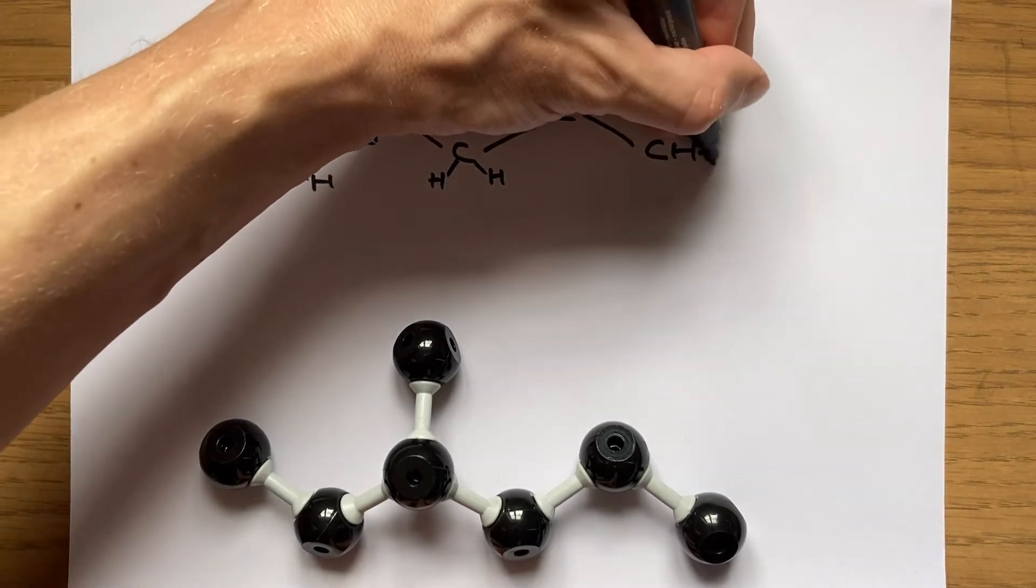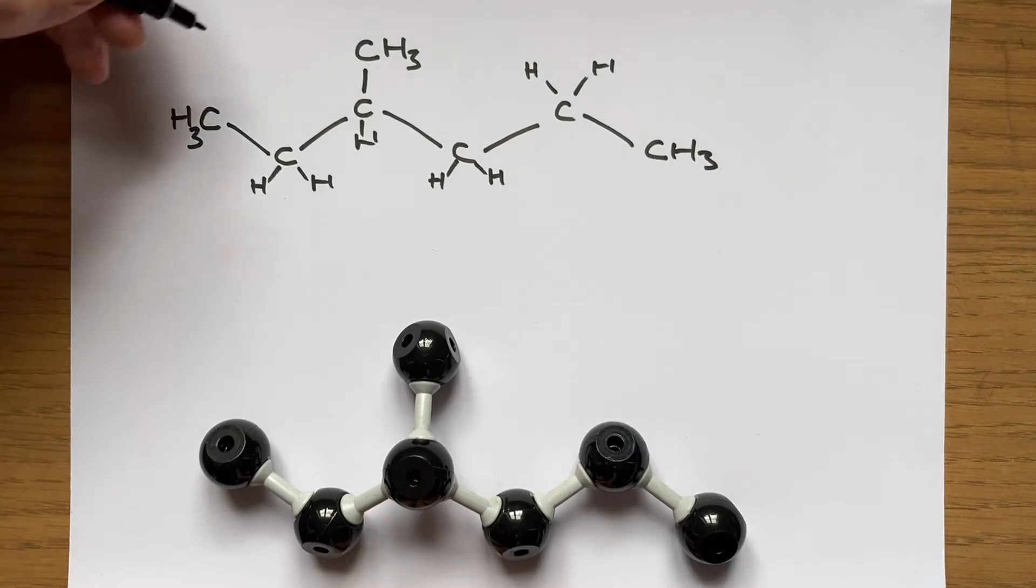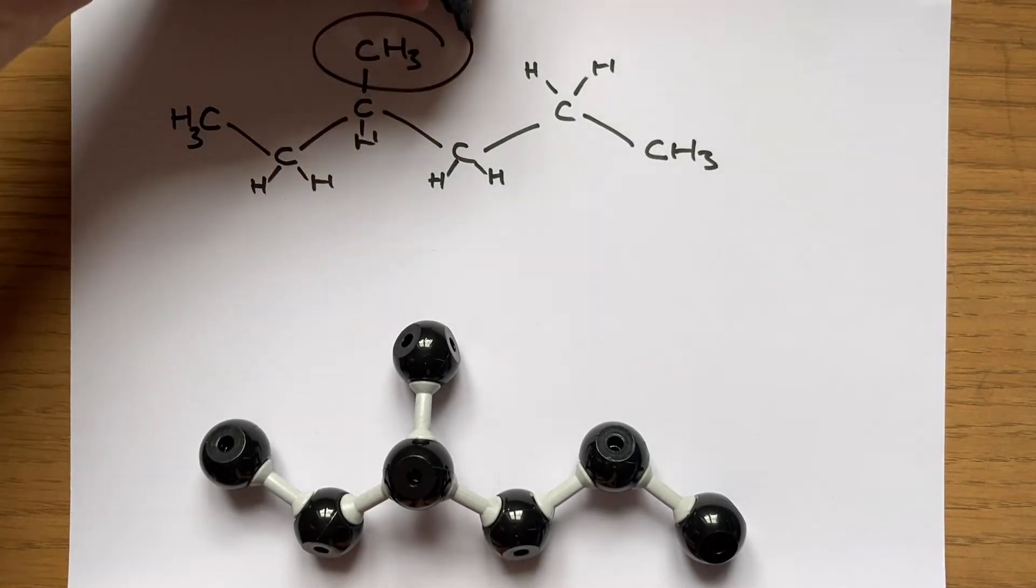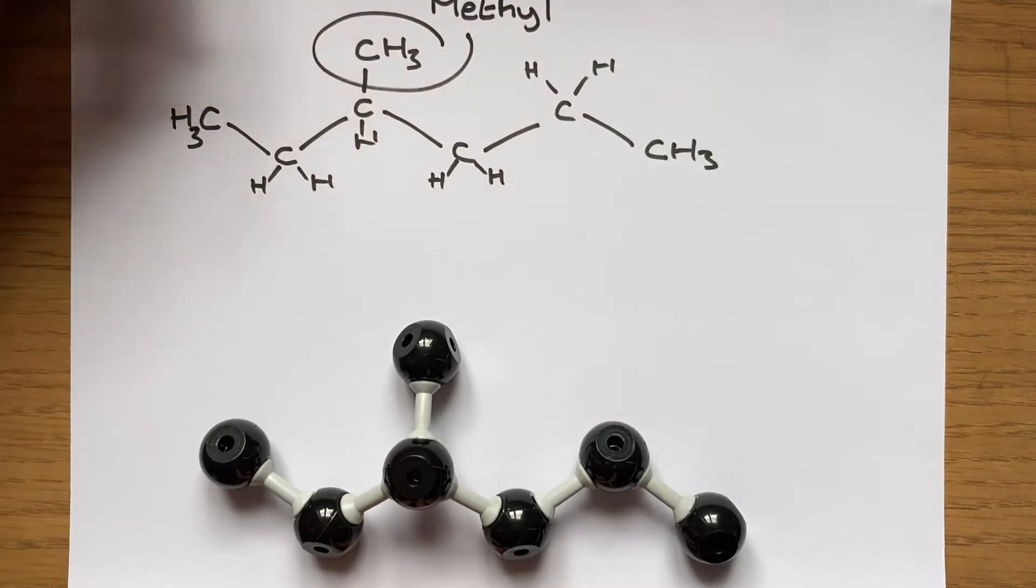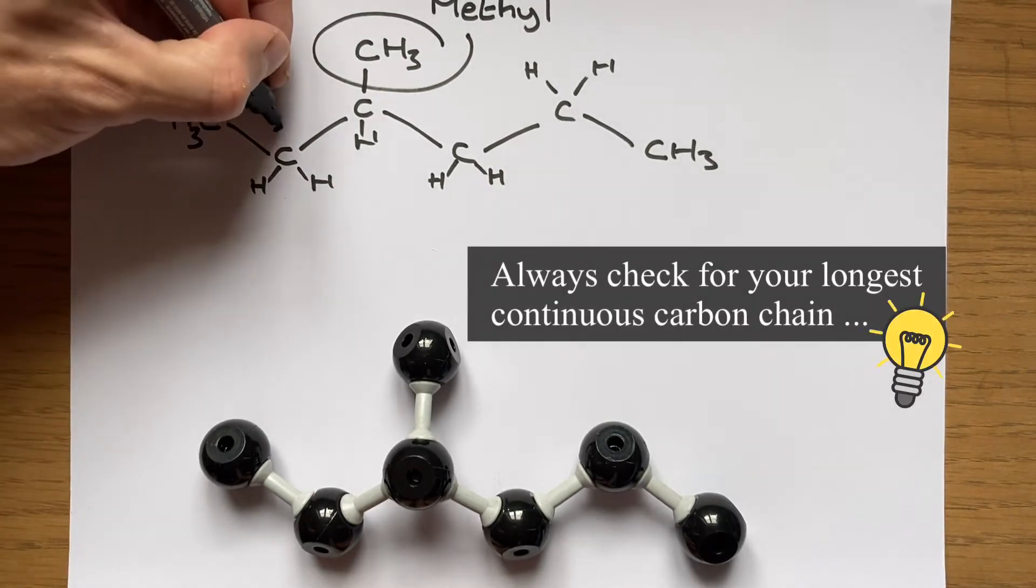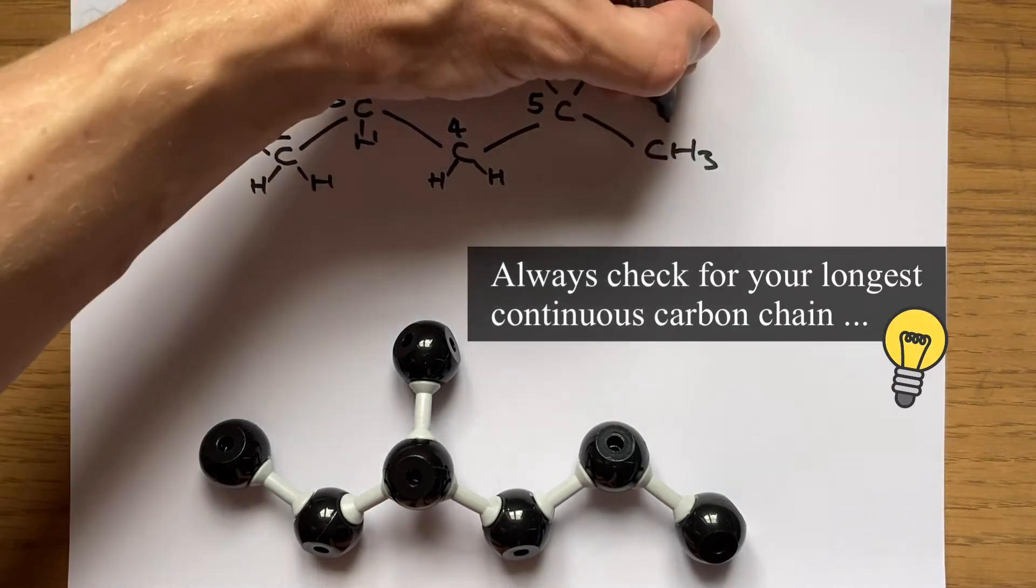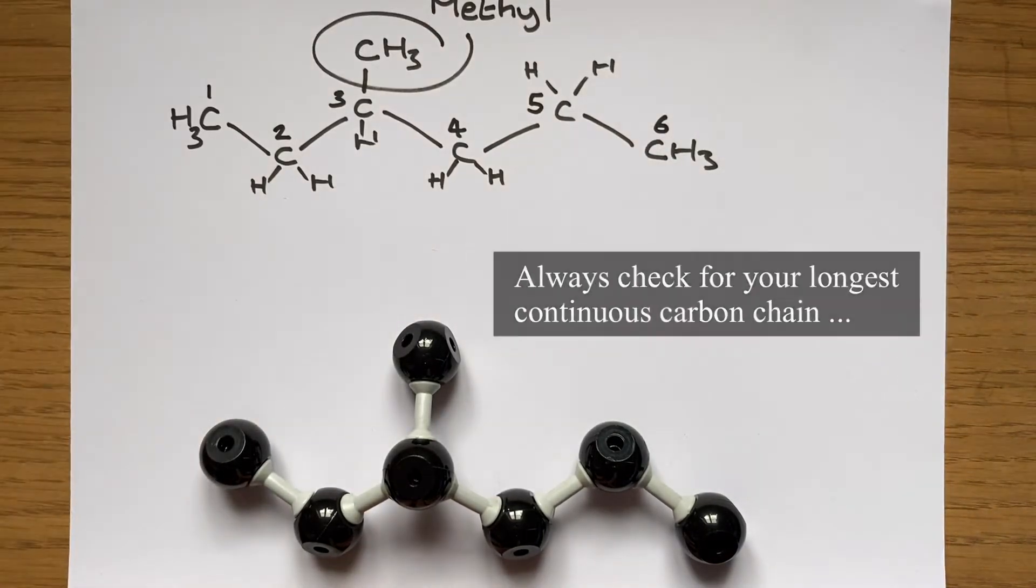Once I've done this I can then go through the molecule and number each carbon in the longest continuous chain. I also need to identify what position that CH3 group, that methyl group is, on the longest continuous chain as exactly which carbon it appears to be on is going to be absolutely crucial to the prefix section of my organic molecule's name.